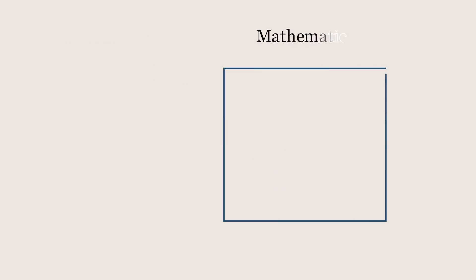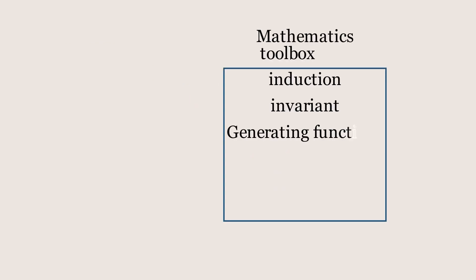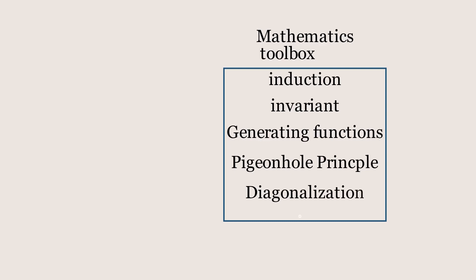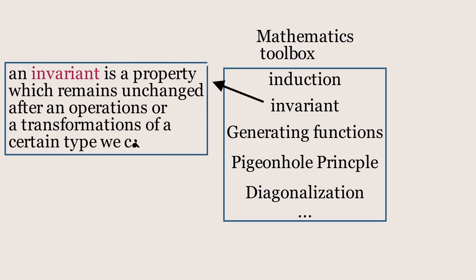One of the tools we have in math is invariance, where we find a thing — be it a numerical value or otherwise — that is invariant under the different states of our question.